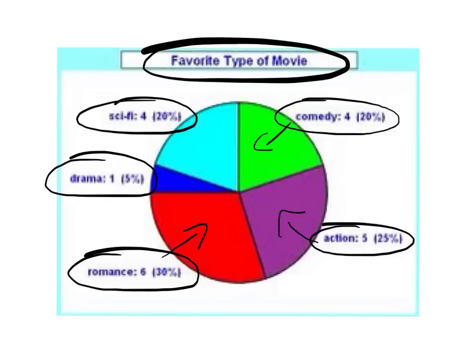So you might get asked which is the least favourite type of movie — in this case it's drama. Or which was the most popular — it's bromance with 30%. Let's look at another example.